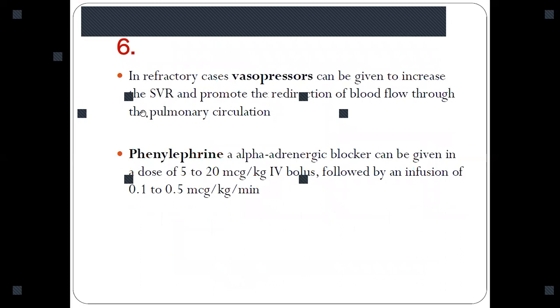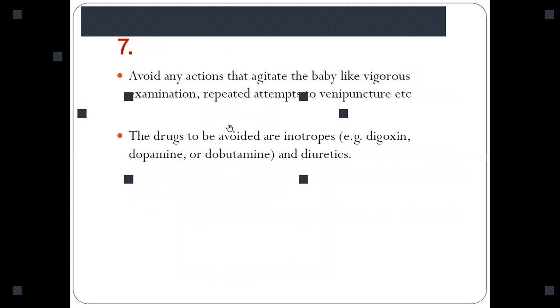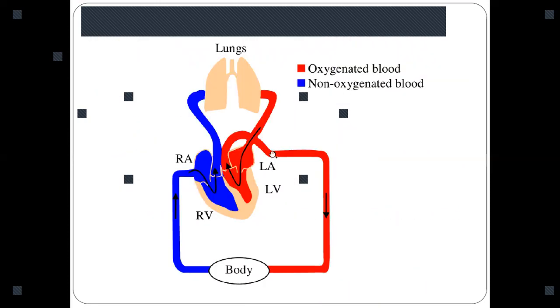In refractory cases, you can use vasopressors to increase the systemic peripheral vascular resistance or systemic vascular resistance. Vasopressors like phenylephrine increase peripheral vascular resistance, thus increasing the left ventricle pressure, and thus the gradient among right ventricle and left ventricle is less, and this admixture of blood will be very much reduced.